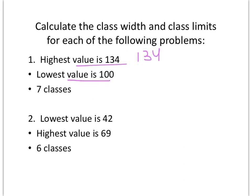And you're going to subtract the lowest value. Subtract 100. And then you're going to divide by the number of buckets or the number of classes you want, 7. So following order of operations, 134 minus 100 will give me 34. And I'm going to divide that by 7.